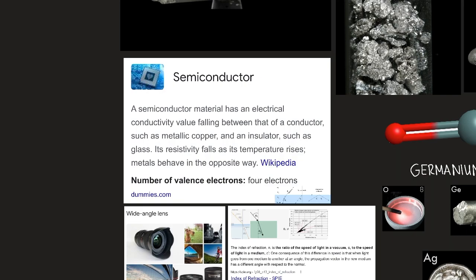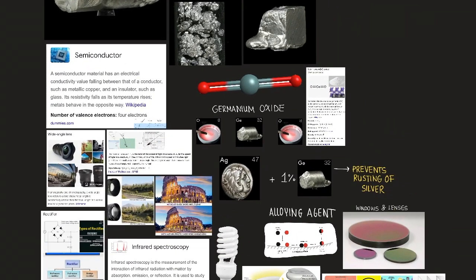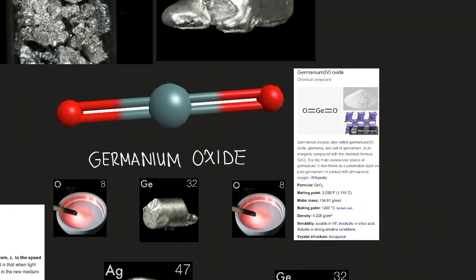The pure element was commonly doped with arsenic, gallium, or other elements and used as a transistor in thousands of electronic applications. Today, however, other semiconductors have replaced it. So germanium oxide, seen here, we have germanium oxide, consisting of germanium, seen here, and two oxygen atoms.